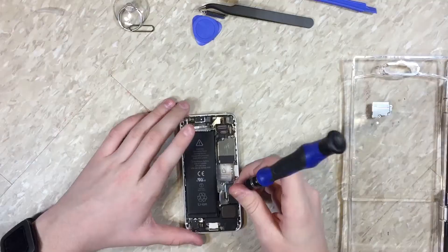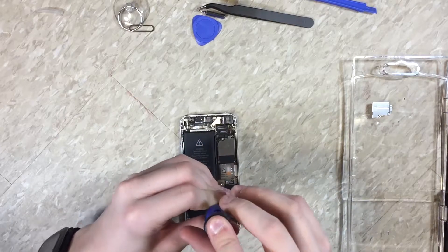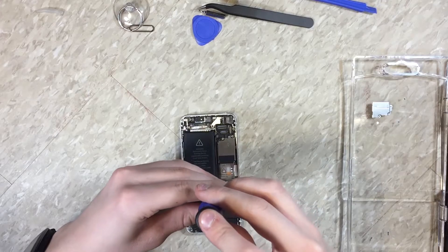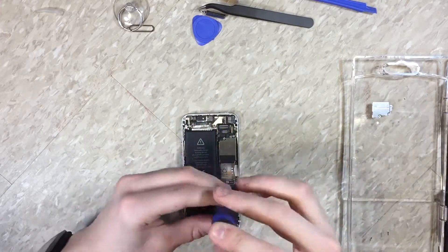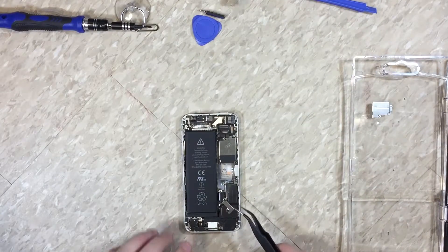Next, you want to get rid of these two screws down here. These are two Phillips 1.0 millimeter again. And just like that, the little plate comes right off. Grab that.